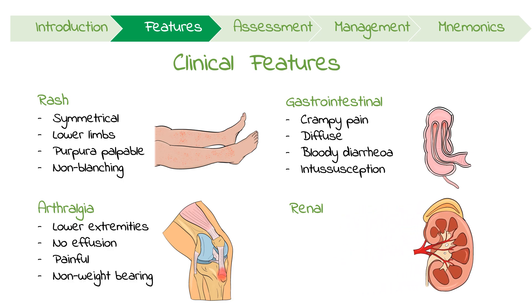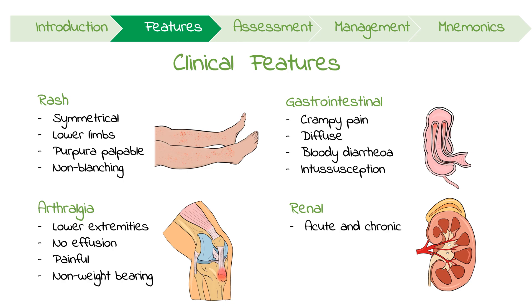Finally, renal involvement can be both acute and chronic. Although it's usually mild, acute glomerulonephritis can manifest in the form of hematuria and hypertension.